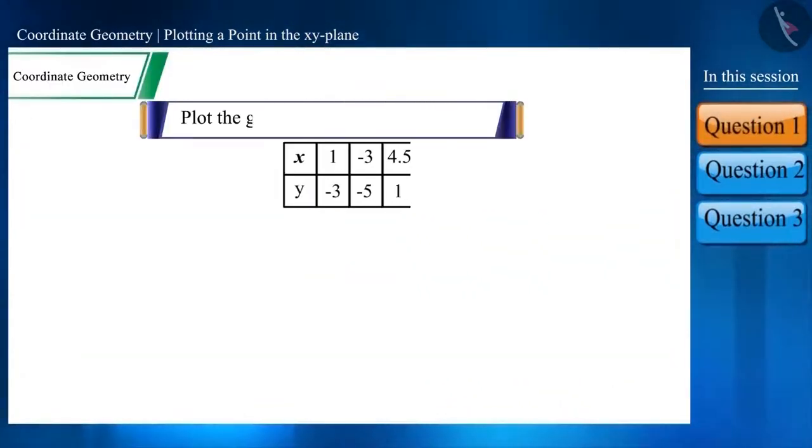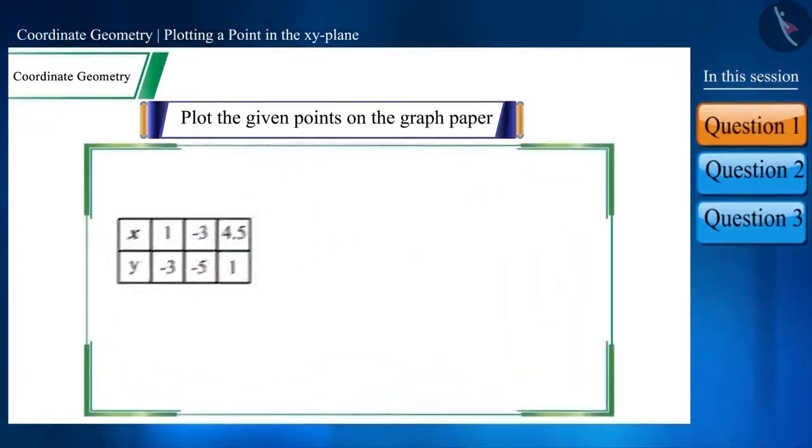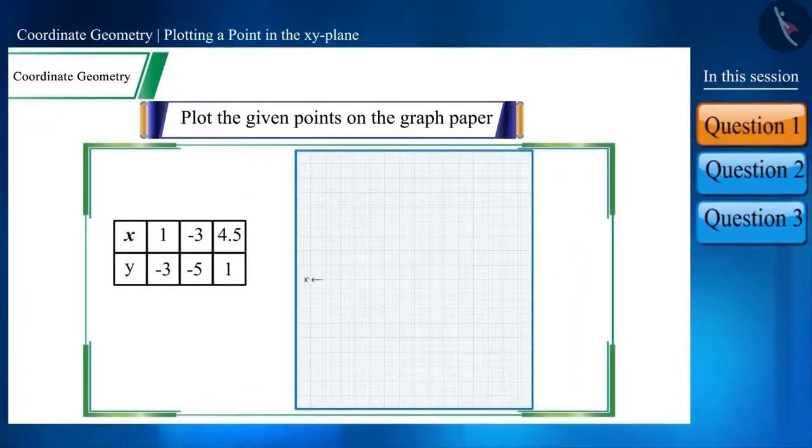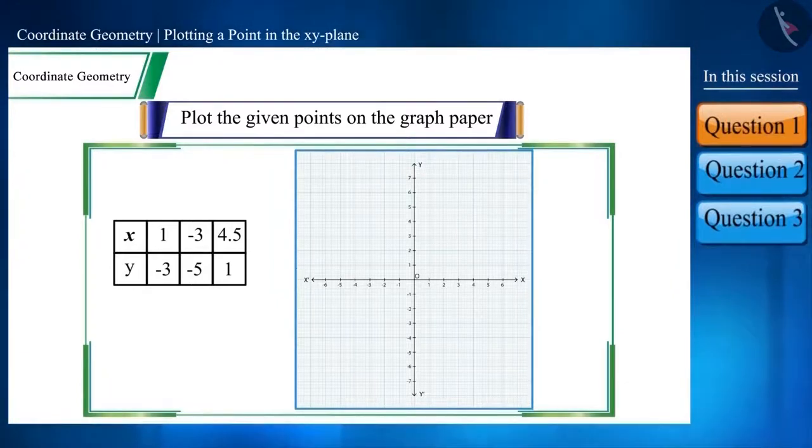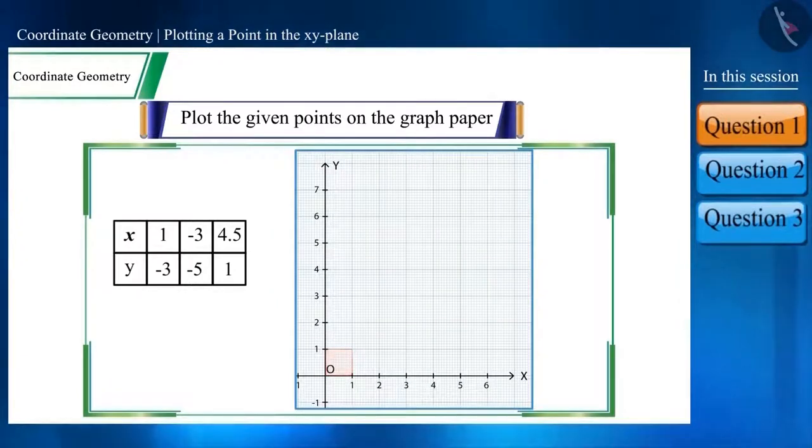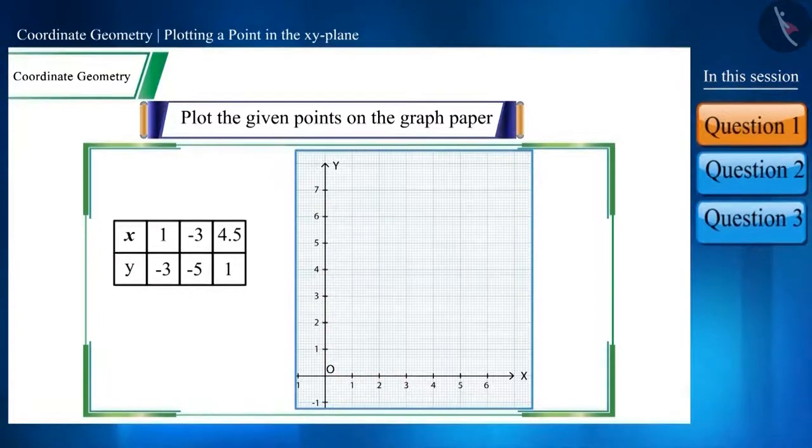Plot the given points on the graph paper. Let us draw the X and Y axis on a graph paper. One important thing to note is that when we write numbers on the X and Y axis, how many units we have to take for one centimeter depends on the coordinate points, which we call scale.